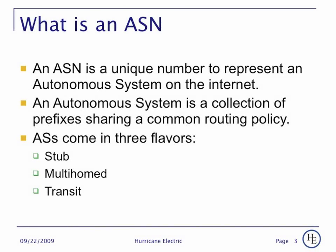What is an autonomous system number? An autonomous system number is a unique number used to represent a collection of routes or prefixes with a common routing policy on the internet or any other IP network. They come in three principal flavors. STUB, which is what most businesses have — they have one or more upstream providers to which they connect and receive either default or full tables, and they advertise their own routes.